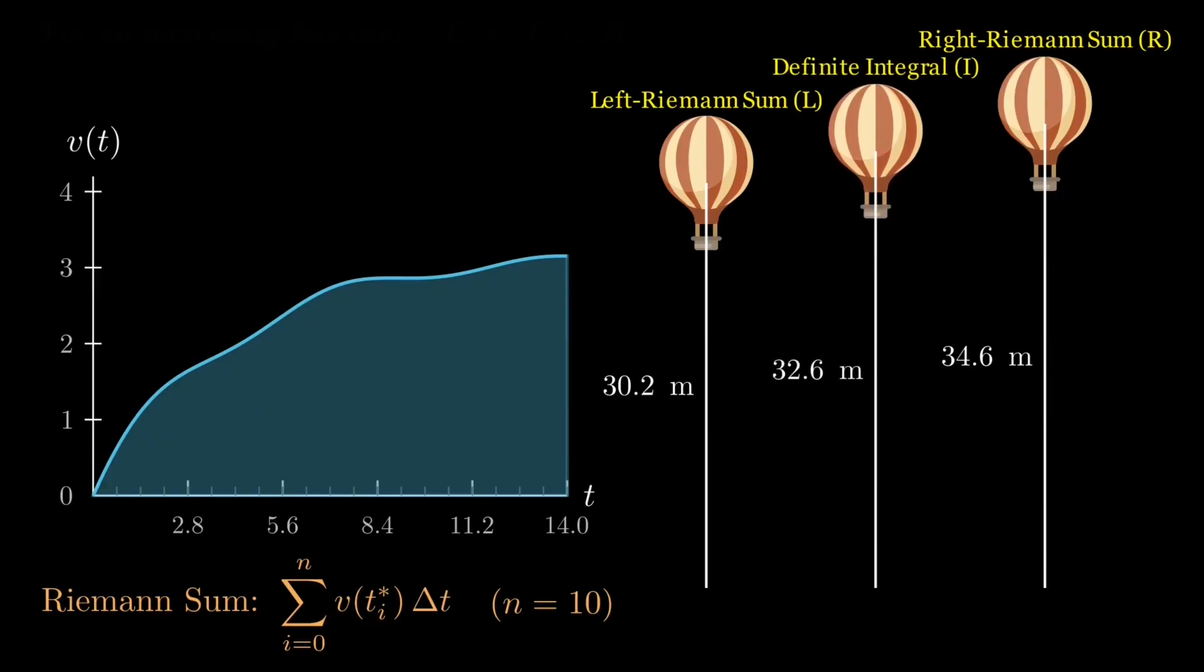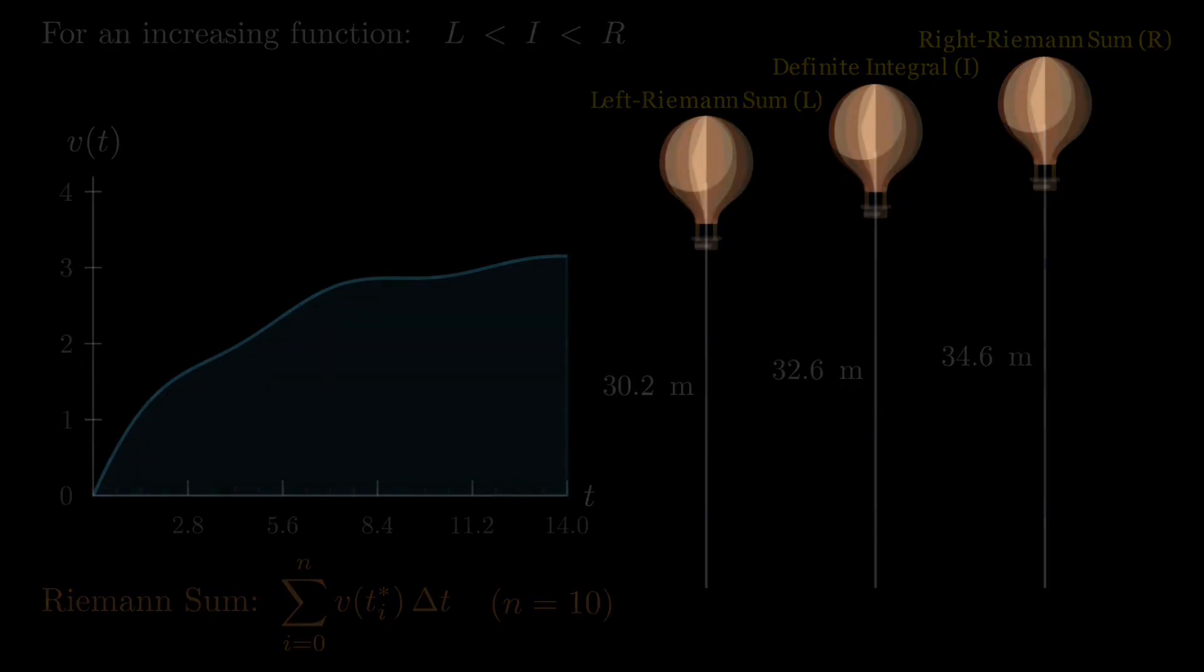So, whenever the function is strictly increasing, you can expect the left sum to be a lower bound and the right sum an upper bound on the true integral. You can verify that the opposite is true in case of decreasing functions.